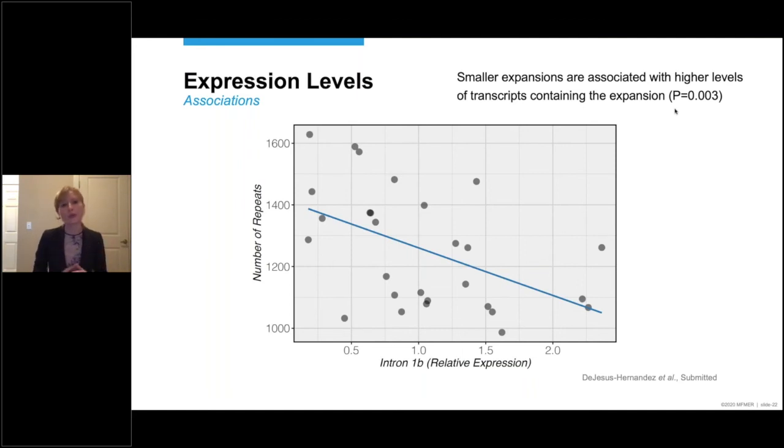But it's also important to look at intron containing transcripts, possibly pre-messenger RNA transcripts. Intron 1b is located after the expansion. So transcripts that contain intron 1b probably contain the expansion as well. And therefore they could be used as a surrogate marker. Now what we see here is that as the number of repeats decreases, the expression levels of these intron containing transcripts or expansion containing transcripts go up. And so maybe it's easier to transcribe small expansions than long expansions.